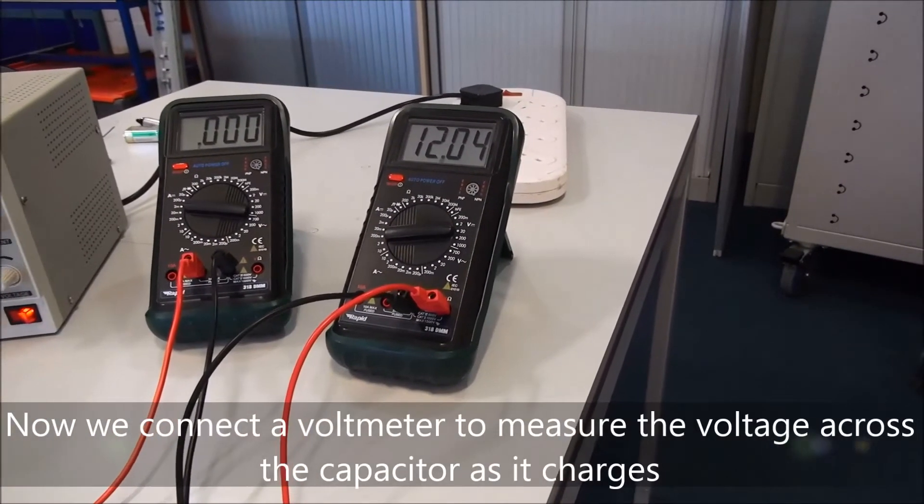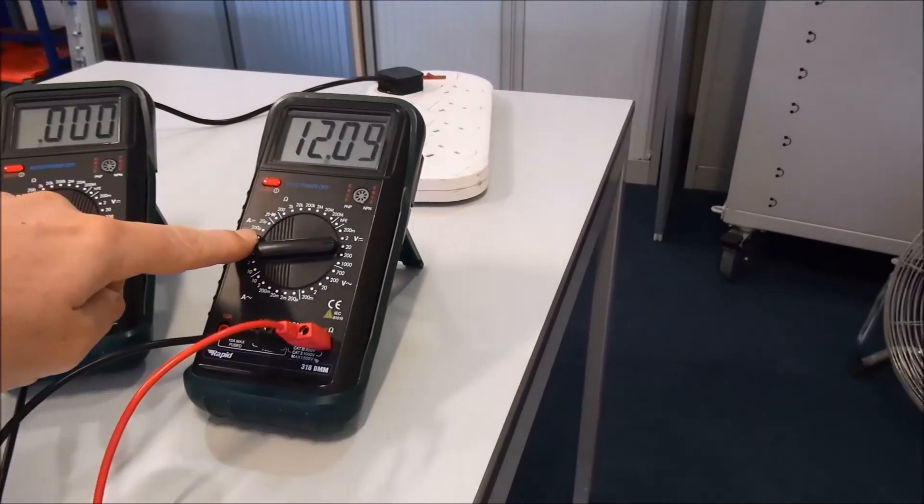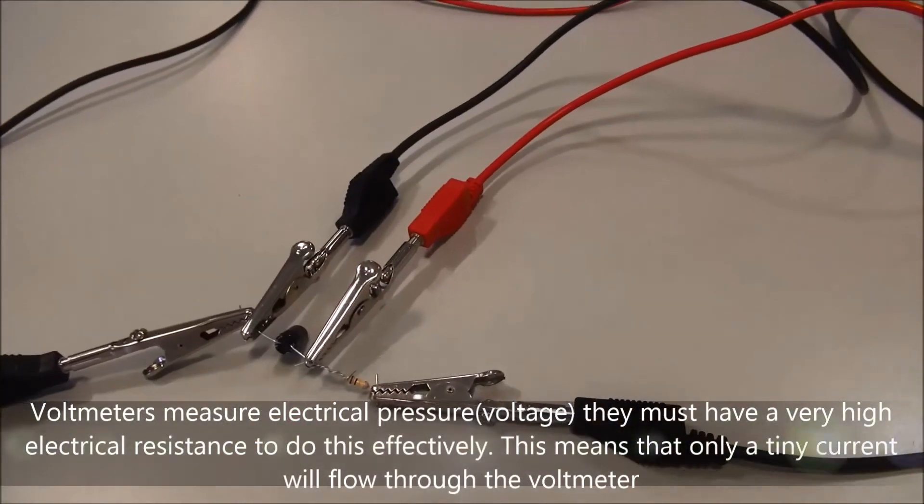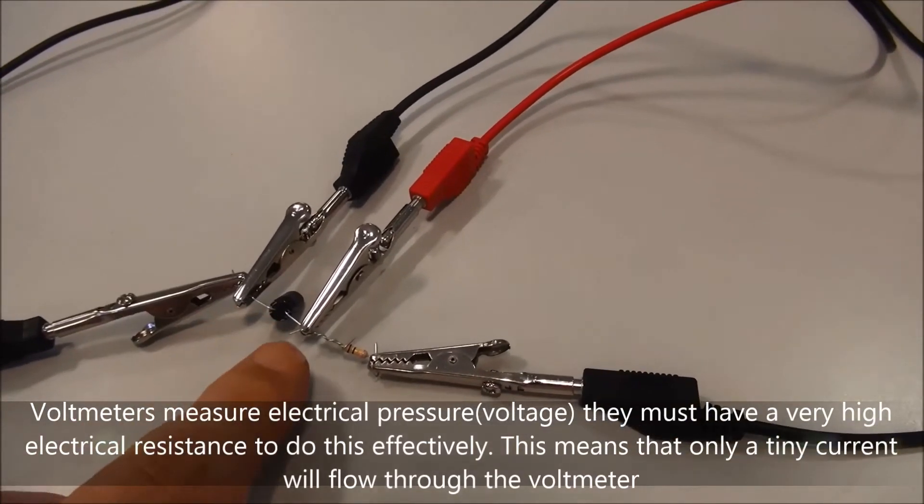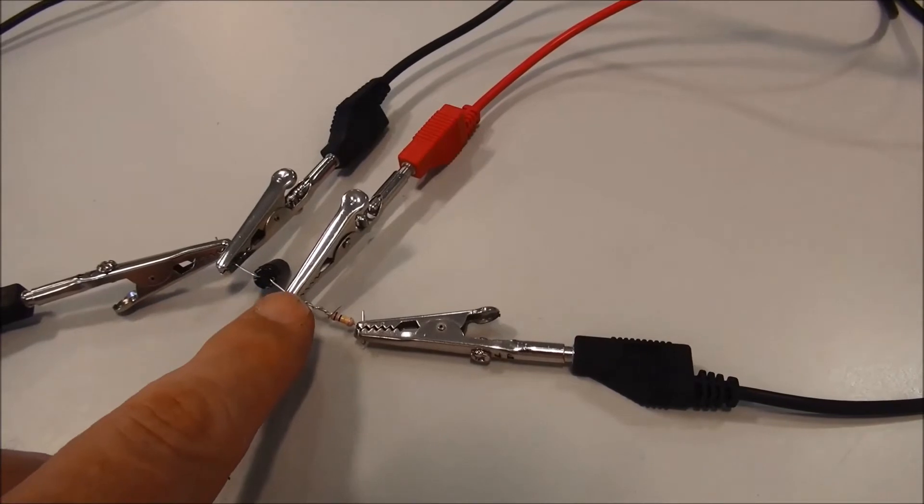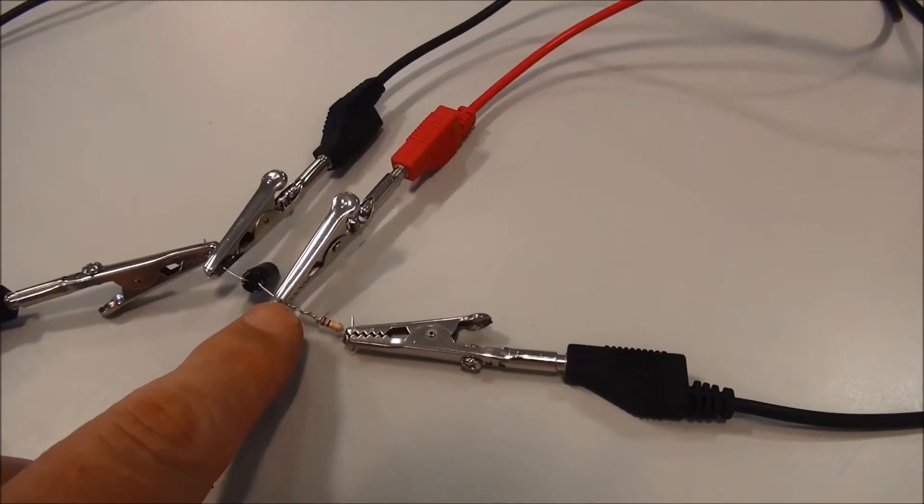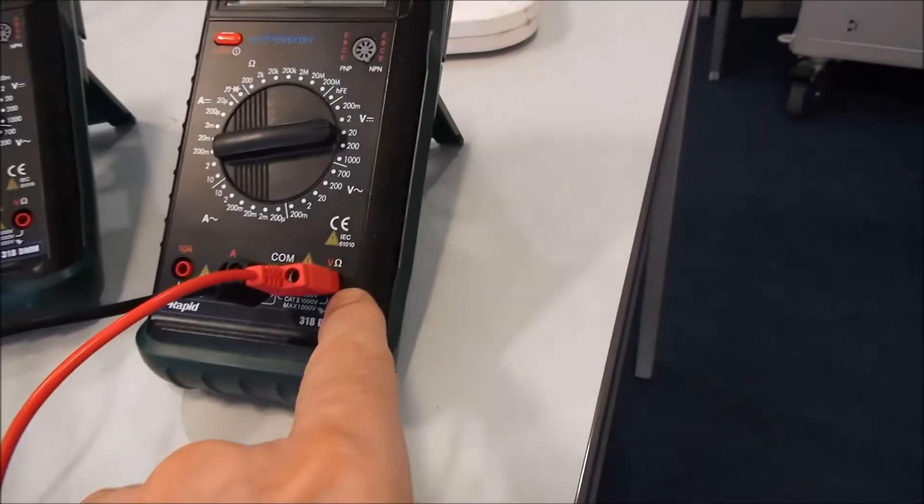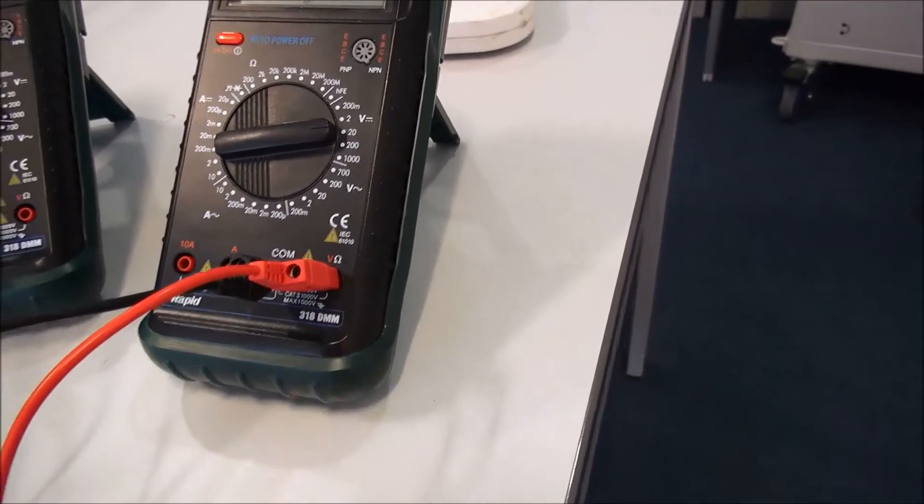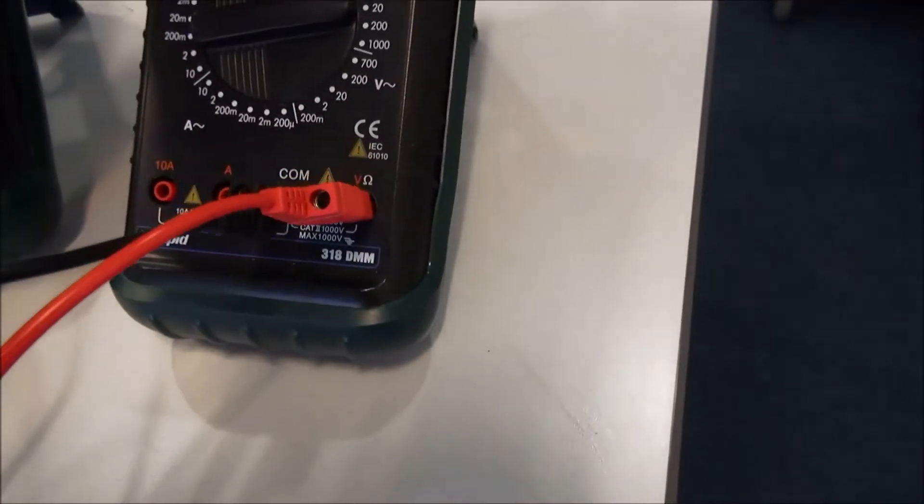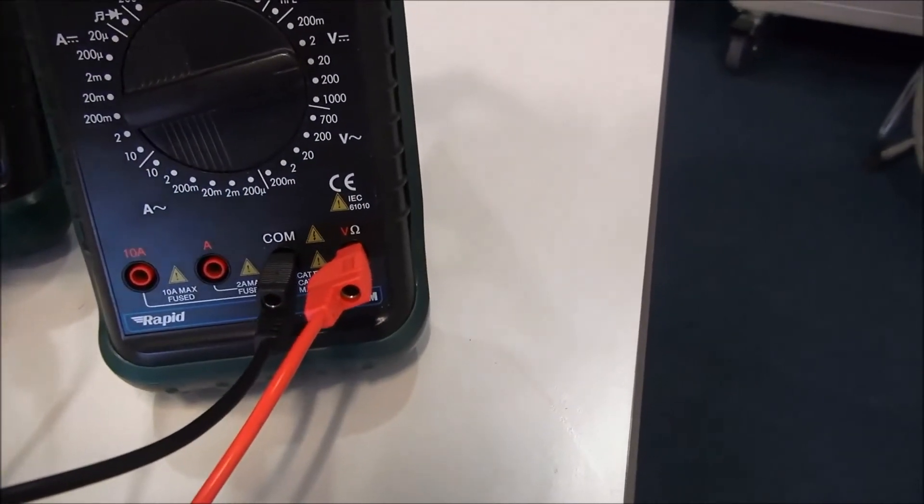Next, we want to connect a voltmeter across the capacitor, like this. So the voltmeter probes are connected directly across the capacitor. The positive probe to the more positive side of the circuit, which goes back to the volt-ohm port here. And the common probe there goes to the common probe on the meter.